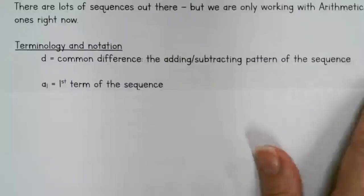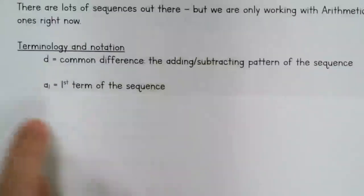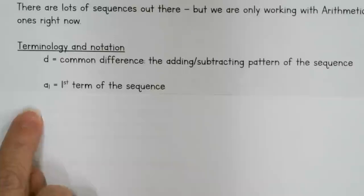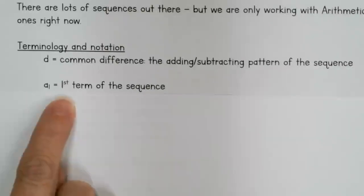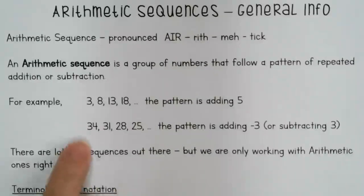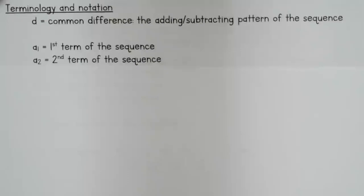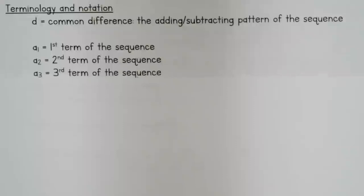Next up — this is a subscript, meaning it's written lower. It's not multiplication and it's not an exponent; it's just helping to identify position. 'a sub 1' is the first term of the sequence — so going back to our example, 34 is the first term. 'a sub 2' represents the second term of the sequence, and 'a sub 3' would represent the third term.